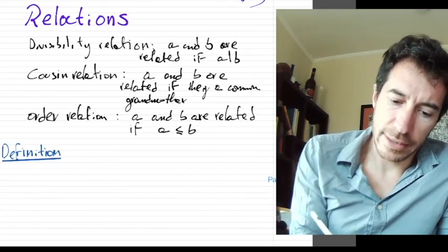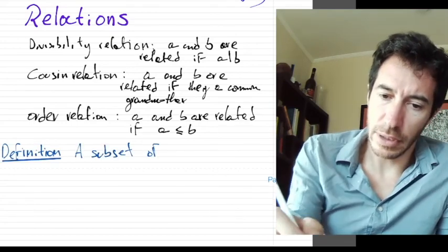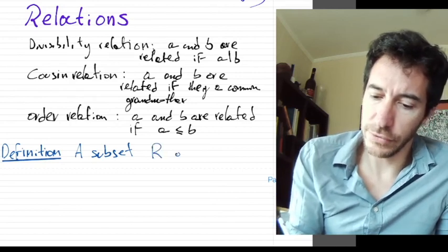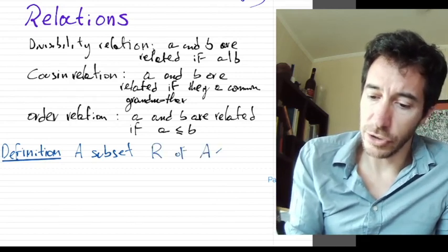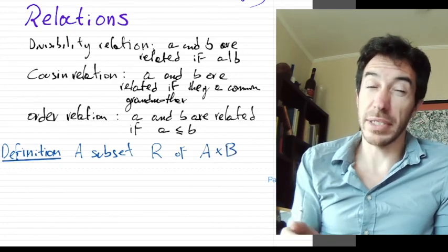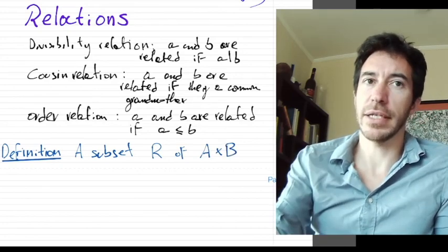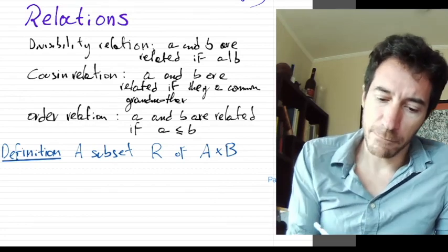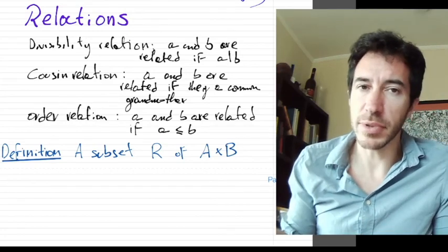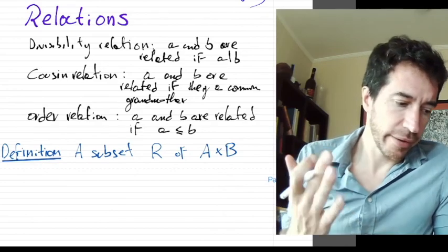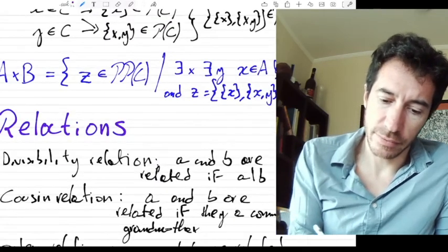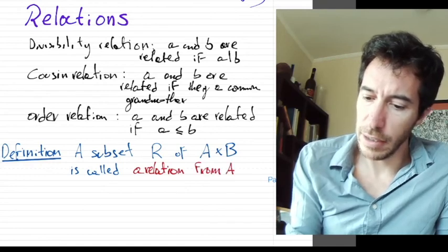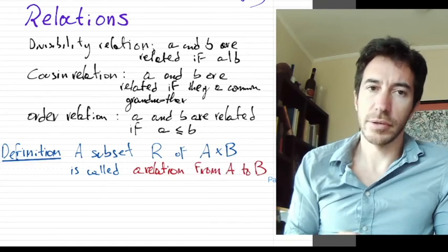Definition. A subset R of A cross B - remember this is the Cartesian product of A and B, it's a set of pairs of elements from A and elements from B. Just a subset R of A cross B is what is called a relation from A to B. So that's it. There's nothing to it. It's just a set of pairs from A and B.